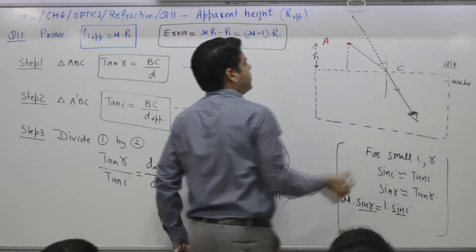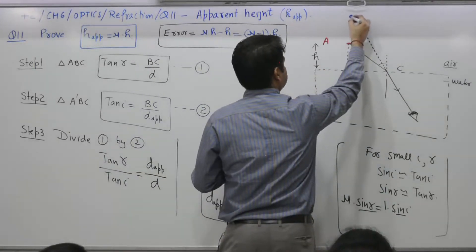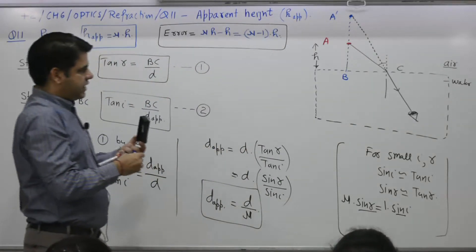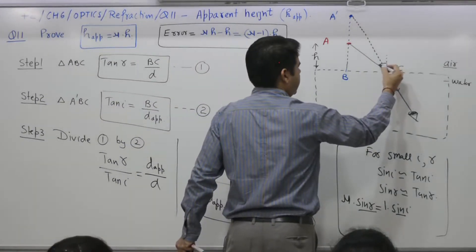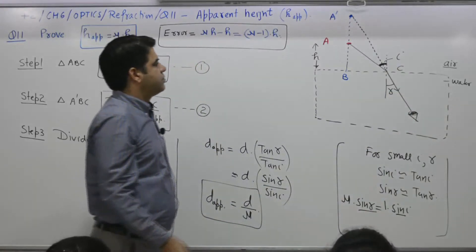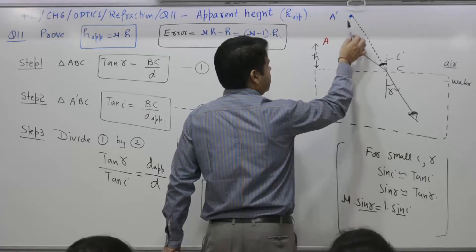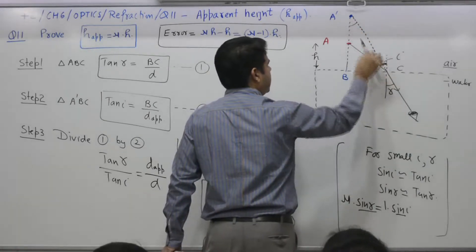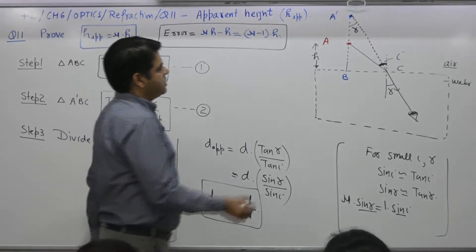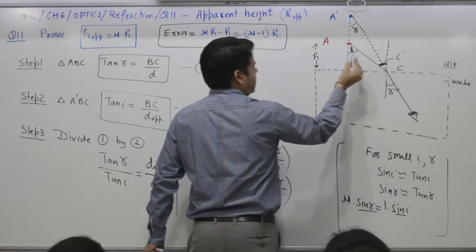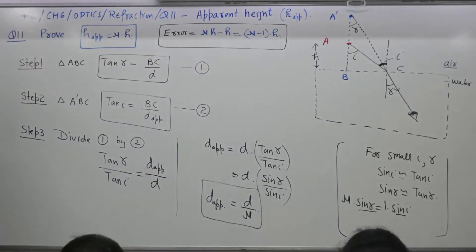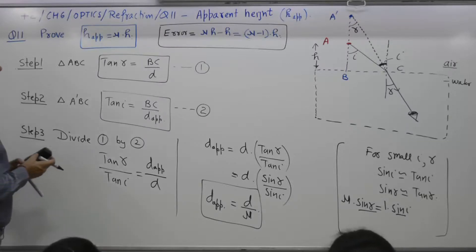The ray appears to be coming from A-dash. We need to mark the angles. This angle is the angle of incidence i. The angle of refraction is r. Using parallel lines, this angle is also r, and this angle here is also i. There are two triangles: triangle ABC and triangle A-dash BC. For angle ABC, you need to write tangent of some angle.